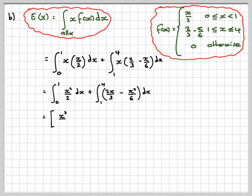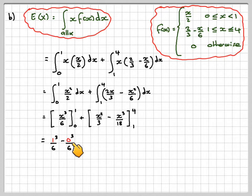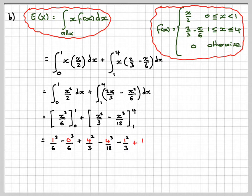Integrating, we get x cubed over 6 from 0 to 1, plus from 1 to 4: x squared over 3 minus x cubed over 18. Substituting in the limits carefully: 1 cubed over 6 minus 0 cubed over 6 — don't assume putting in 0 gives 0 — plus 4 squared over 3, minus 4 cubed over 18, minus 1 squared over 3, and then minus minus gives plus 1 cubed over 18. Be careful that it's a plus there.